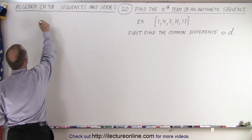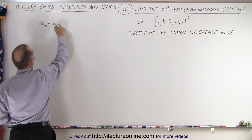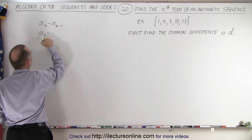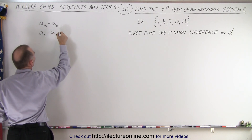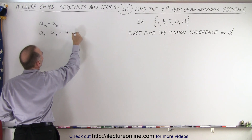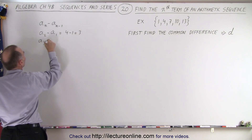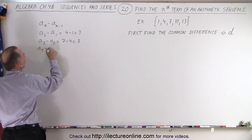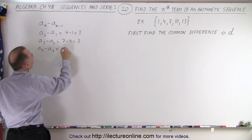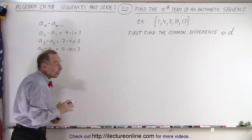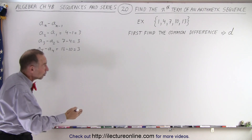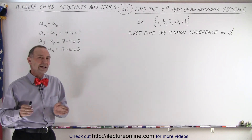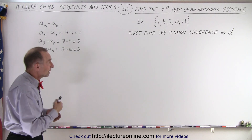To find the common difference, we take the nth term and subtract the (n minus 1) term. So if we let n equal 2, we get a sub 2 minus a sub 1, which is 4 minus 1, equal to 3. A sub 3 minus a sub 2 equals 7 minus 4, which is 3. And a sub 5 minus a sub 4 equals 13 minus 10, which is 3. It doesn't matter which consecutive pair you pick — the difference will always be the common difference. In this case it's equal to 3.